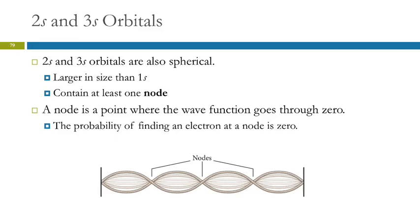If we look at 2s and 3s, those orbitals are also spherical. They're larger as n grows - the size of the orbital grows - and these orbitals also contain at least one node.